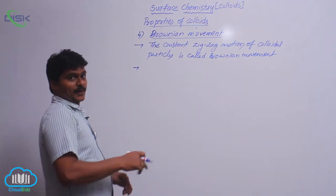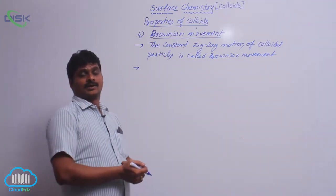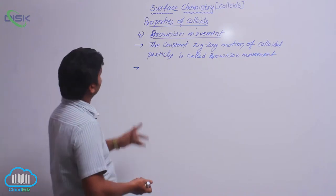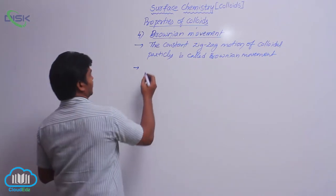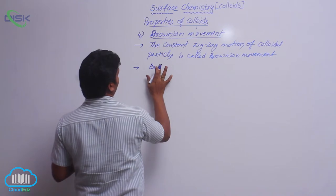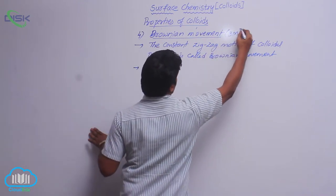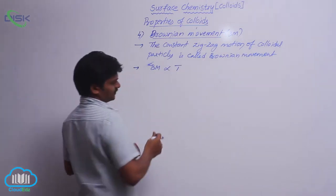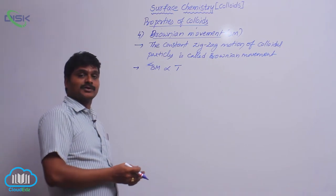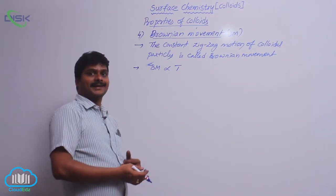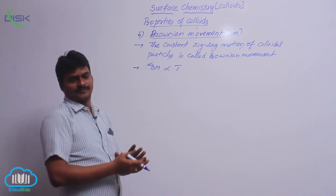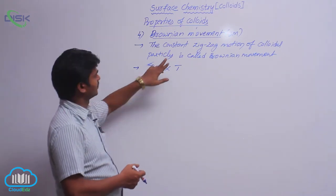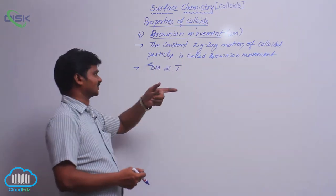What is the reason for Brownian movement, and which factors affect it? Brownian movement (BM) is directly proportional to temperature. That means when the temperature of the solution is increased, the particles move more rapidly with greater velocities. Brownian movement — this constant zigzag motion of colloidal particles — increases with increase in temperature.